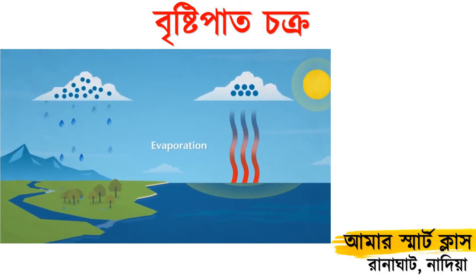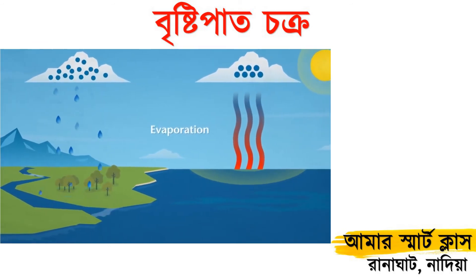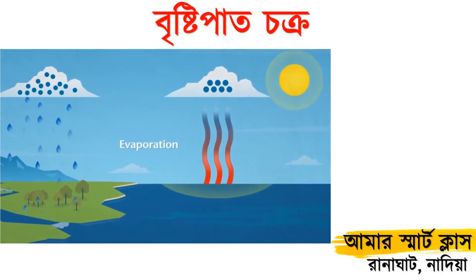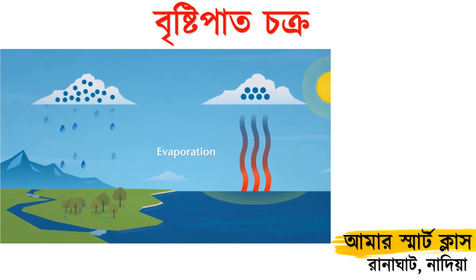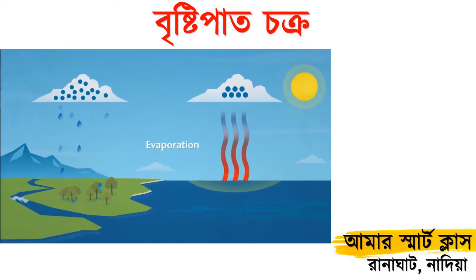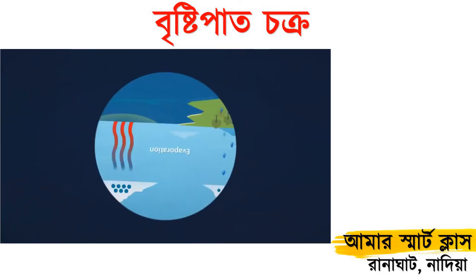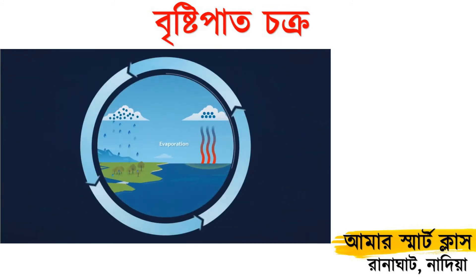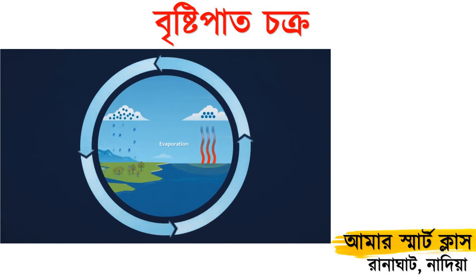Raindrops fall on the ground surface where the sun can shine on them, and the whole process happens again. This is called the water cycle and keeps water moving from the ground to the sky, providing the water needed for plants, animals, and people to survive.